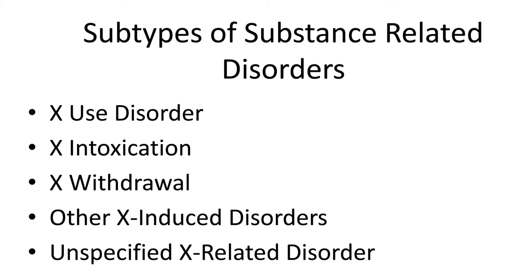So, for the subtypes of substance related disorders, there are several things, and you'll see this when you get in the DSM-5, and you're looking at the disorders. What you'll see is you'll have whatever particular disorder, whether it be alcohol, or marijuana, or opiates, or what have you, inhalants, whatever they are, and it'll say X use disorder, and then X intoxication, X withdrawal, other X induced disorders, or unspecified X related disorders, and that's usually the progression there, and that's the way the new DSM-5 is laid out.